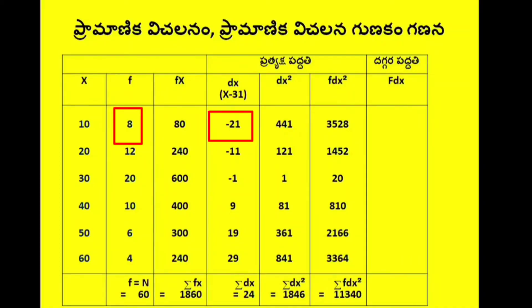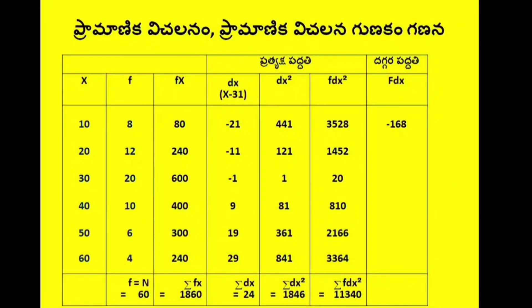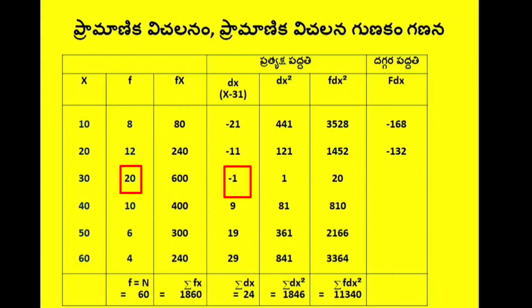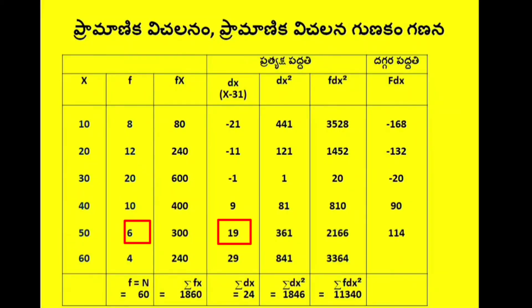So fdx: 8 times minus 21 equals minus 168, 12 times minus 11 equals minus 132, 20 times minus 1 equals minus 20, 10 times 9 equals 90, 6 times 19 equals 114, 4 times 29 equals 116. Plus into minus is minus, and the negative and positive values cancel. If sigma fdx is equal to 0, the minus and plus values are equal.